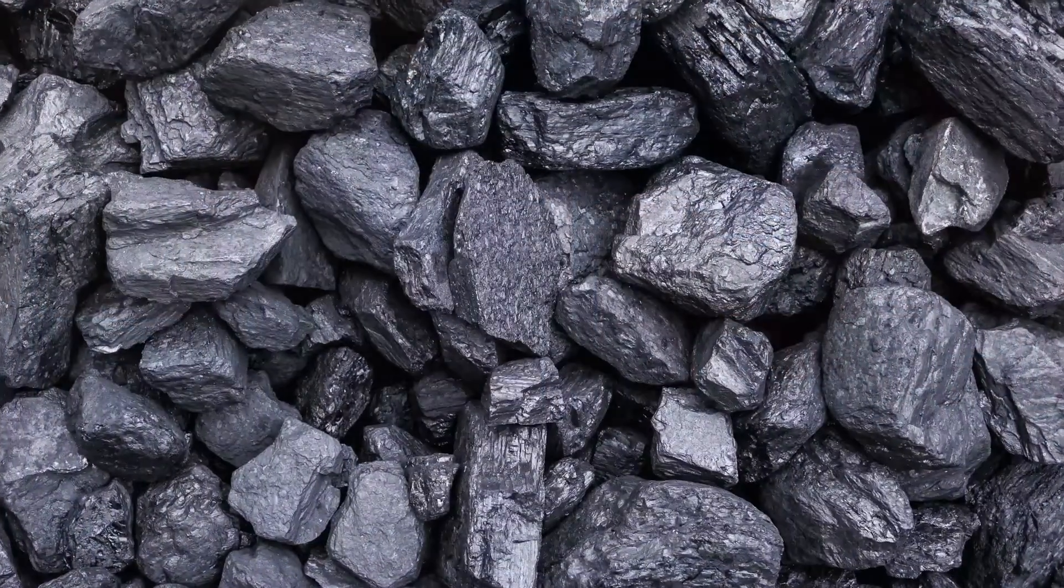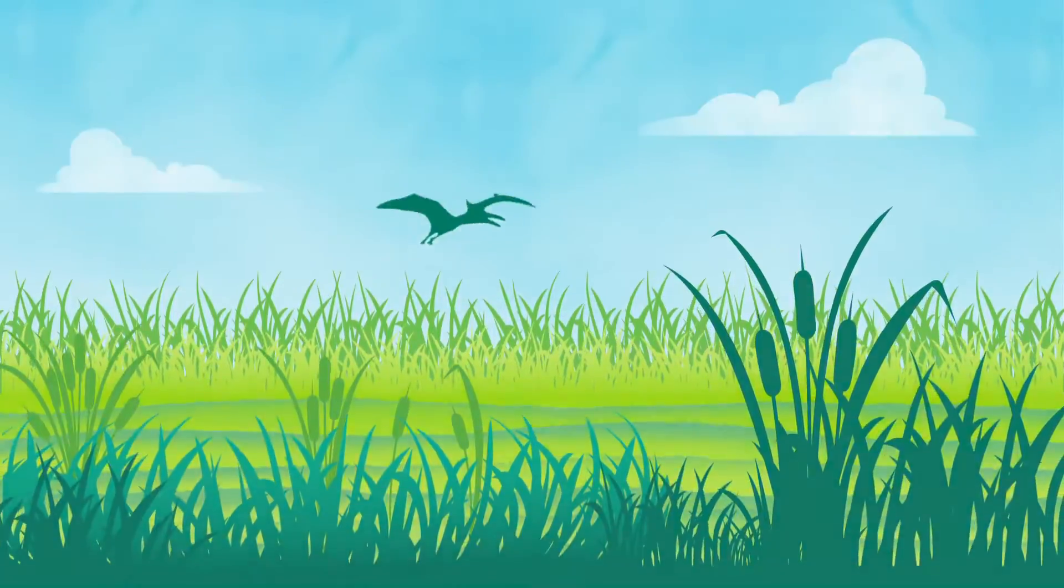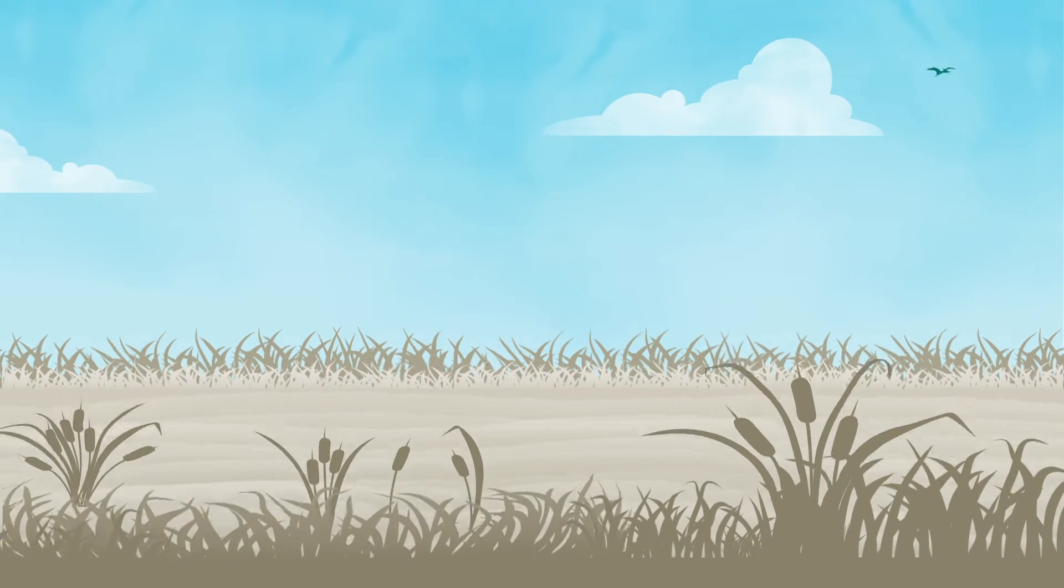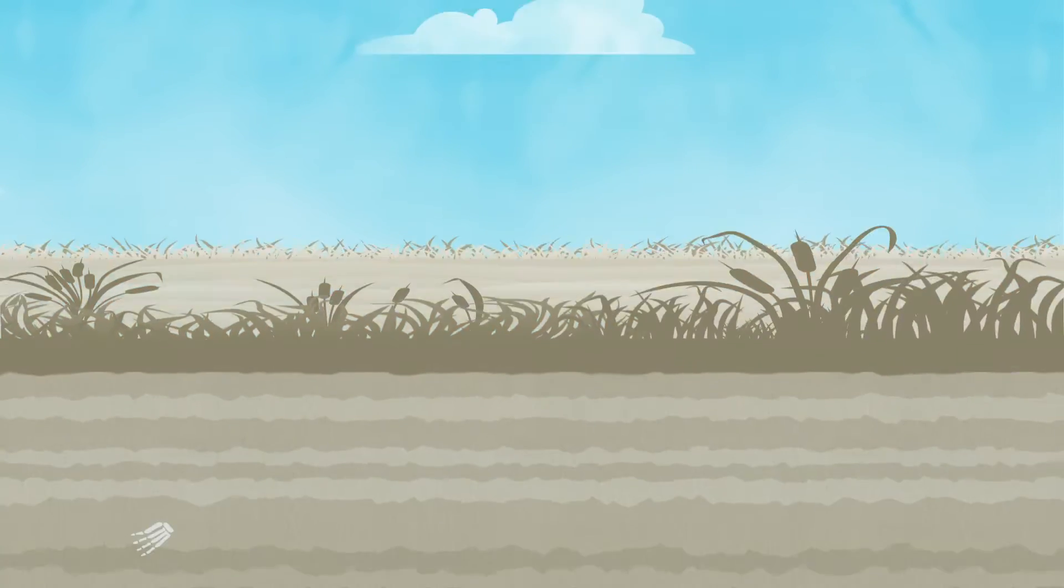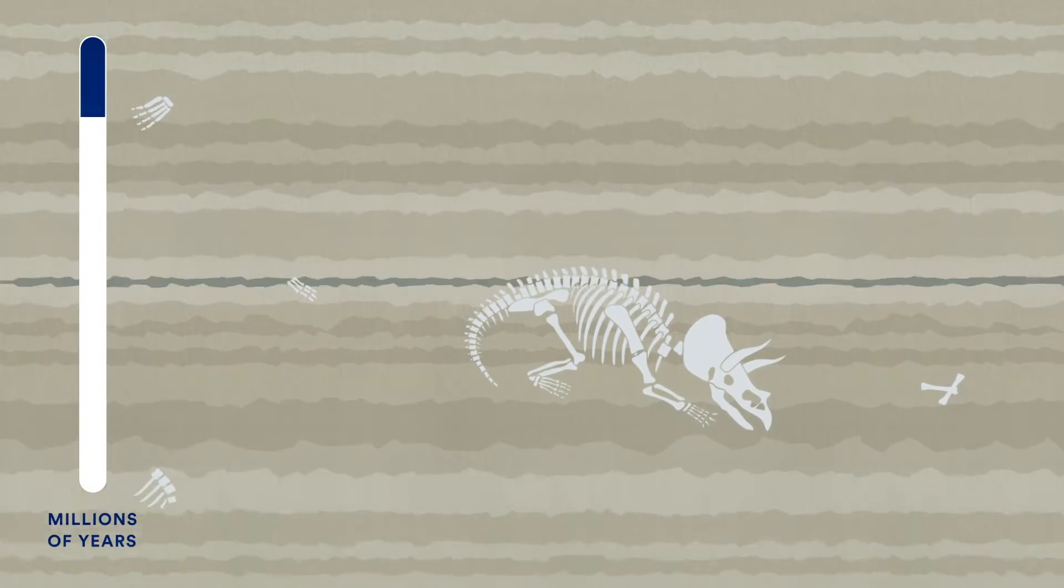Coal being mined today was formed as plants grew, died, and accumulated in ancient marshland.